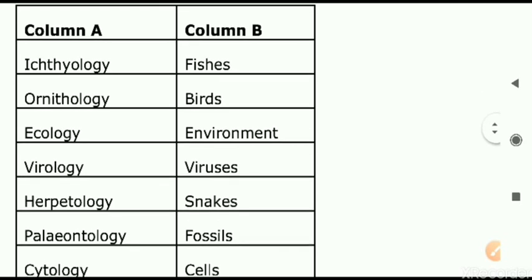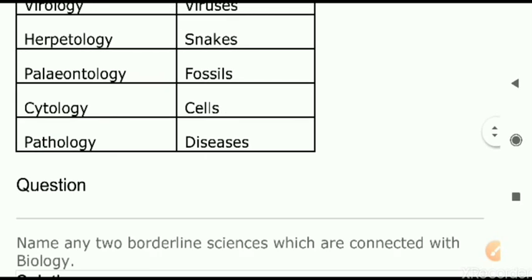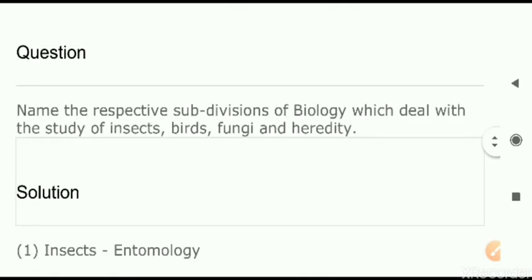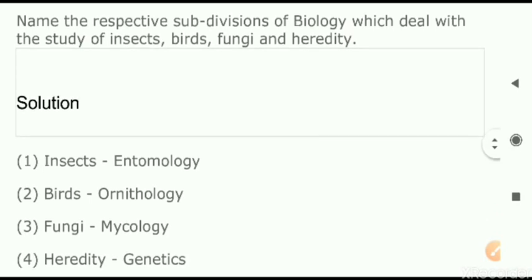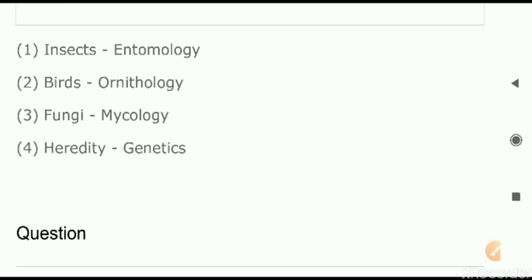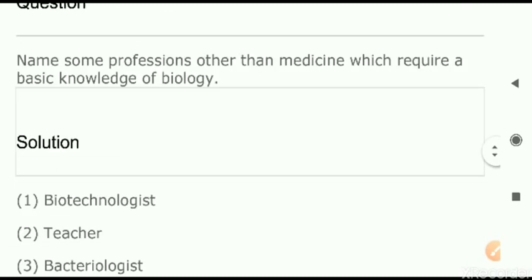Now the matching is there — all options are mentioned ahead of column A. You can take a note if you need. Next — name any two borderline sciences which are connected to biology. Borderline means an interrelated or interdisciplinary subject. Biotechnology — here we are using biology as well as some engineering concepts, both dealt together. Biotechnology as well as bioengineering. Next — name the respective subdivisions of biology: study of insects is entomology, birds is ornithology, study of fungi is mycology, study of heredity about DNA and all — that is under genetics.